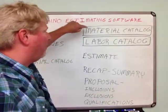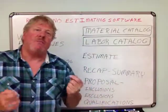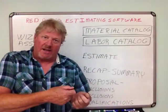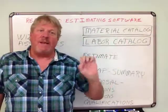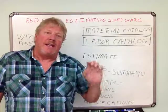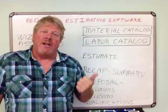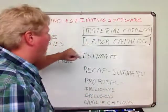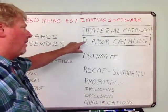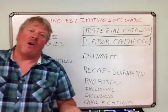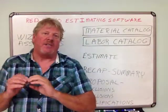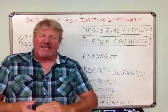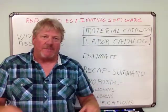Red Rhino has a material catalog with several thousand material items priced in it. They go electronically and grab pricing from the cyber world and update that material price every month by the fifth of the month. The other thing Red Rhino has is a labor catalog. The labor catalog has just labor only — labor hours it takes to install materials — and it has it for thousands of items.